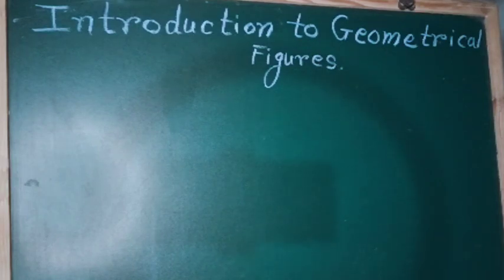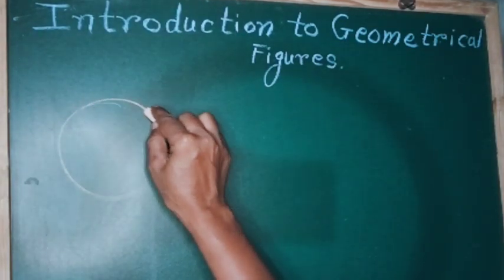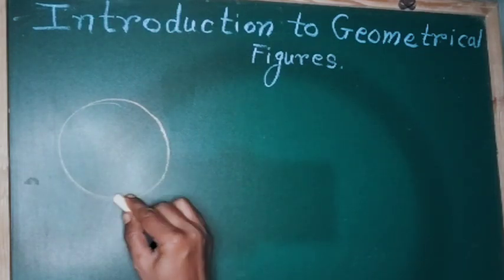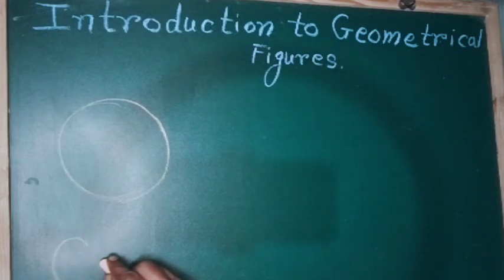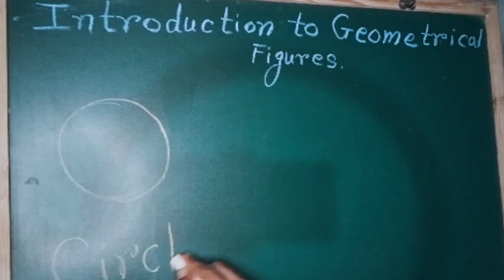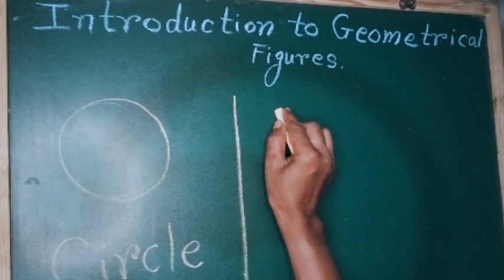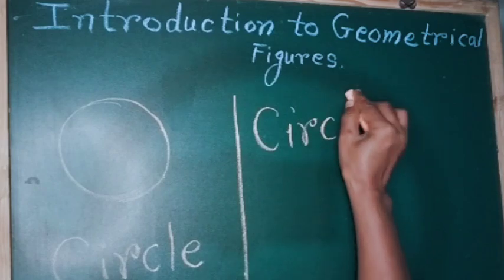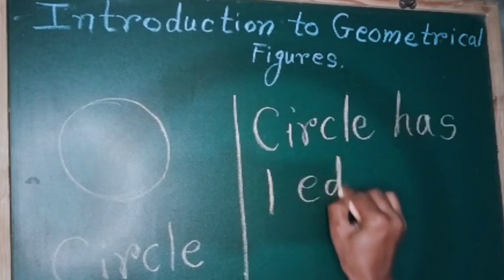Hello friends, today we are going to learn introduction to geometrical figures. See this figure — what is the name of this figure? This figure is a circle. The spelling of circle is c-i-r-c-l-e. Circle has one edge and zero corners.